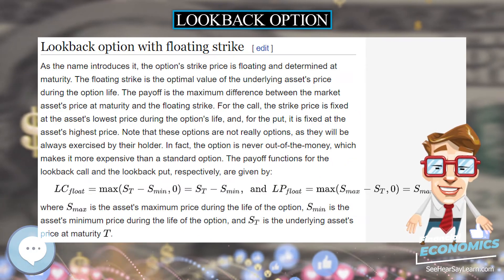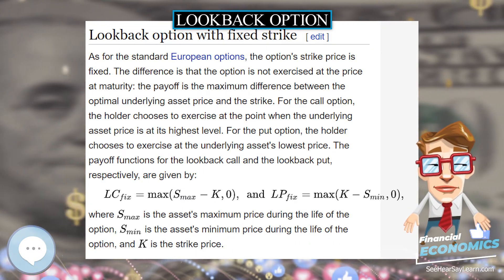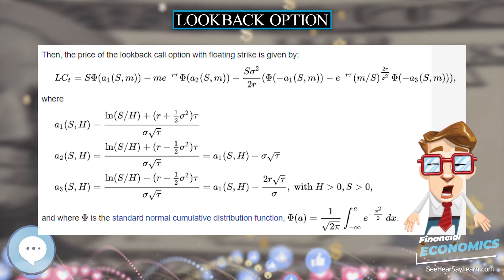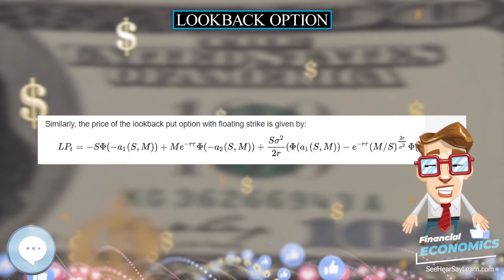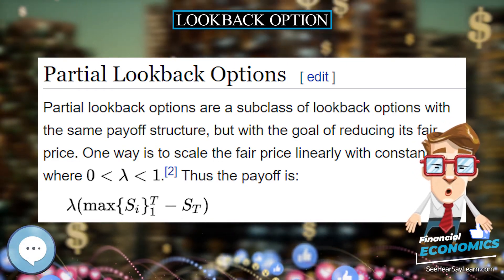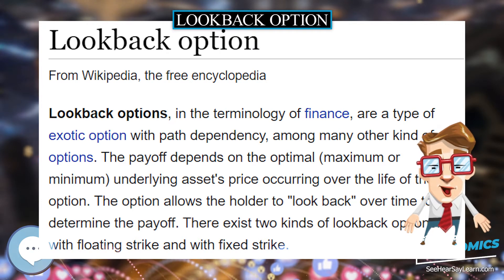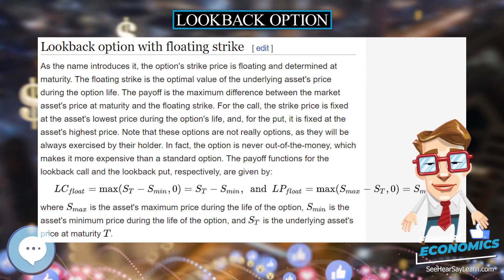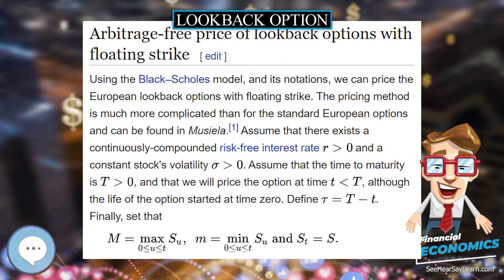Using the Black-Scholes model and its notations, we can price the European lookback options with floating strike. The pricing method is much more complicated than for standard European options and can be found in Musiela. Assume there exists a continuously compounded risk-free interest rate R greater than 0, and a constant stock volatility sigma greater than 0. Assume that the time to maturity is T greater than 0, and that we price the option at time t less than T, although the life of the option started at time 0. Define tau equals T minus t.